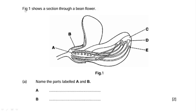The question reads: figure 1 shows a section through a bean flower. This is figure 1 showing the section of a bean flower. It is labeled A, B, C, D, and E.